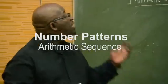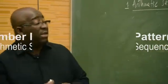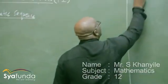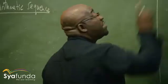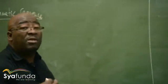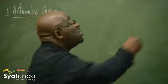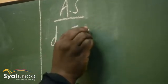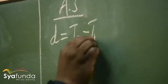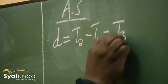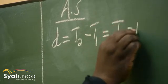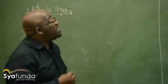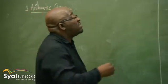I want us to look at a number of patterns. Remember that we've got the arithmetic sequence. The arithmetic sequence has a common difference. So we know that D equals T2 minus T1, which is the same as T3 minus T2, the same as T5 minus T4. We call that the common difference, so that's important.